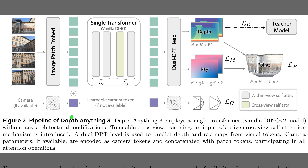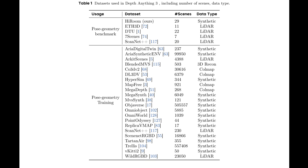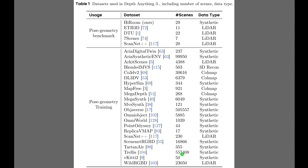Along the bottom, optional camera tokens inject known poses or a learnable stand-in when poses are absent. Table 1 lists the datasets that power training and evaluation. The top block names the pose geometry benchmark suites, indicating scene counts and sensing types like LIDAR or ColMap. The larger bottom block enumerates the pose geometry training sources, mixing synthetic and real captures, so coverage spans indoor, outdoor, and object-centric scenes. The spread shows substantial scale and diversity, which matters because the model must generalize to any view configuration. The entries follow scene-level separation to avoid train-test leakage in shared datasets.